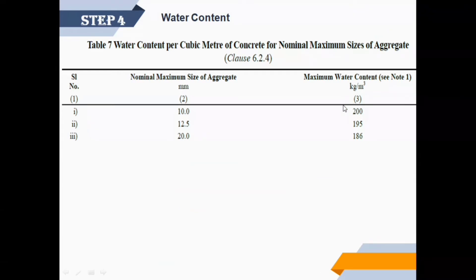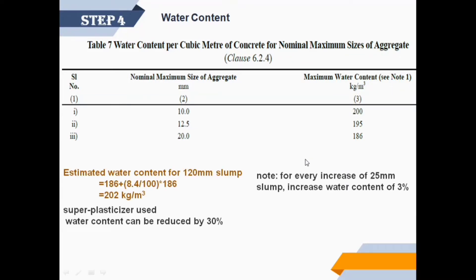Step 4: Water content. From Table 7, water content for 20 millimeters aggregates is 186 kilogram per cubic meter for 50 millimeters slump without superplasticizer. We're calculating for 120 millimeters slump value. According to IS code, for every increase of 25 millimeters slump, increase water content by 3%.